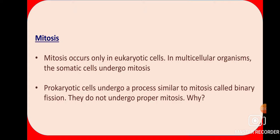Prokaryotic cells undergo a process similar to mitosis. In prokaryotic cells, the nuclear material is indefinite and the nuclear membrane is also indefinite. Because of this, proper mitosis does not occur in them. Instead, they undergo a process called binary fission. 'Fission' means to break up, and 'binary' means into two — so the cell breaks into two rather than dividing properly.